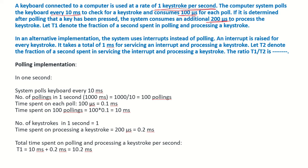Let T1 denote the fraction of a second spent in polling and processing a keystroke. In an alternative implementation, the system uses interrupts instead of polling. An interrupt is raised for every keystroke. It takes a total of 1 millisecond for servicing an interrupt and processing a keystroke. Let T2 denote the fraction of a second spent in servicing the interrupt and processing a keystroke.